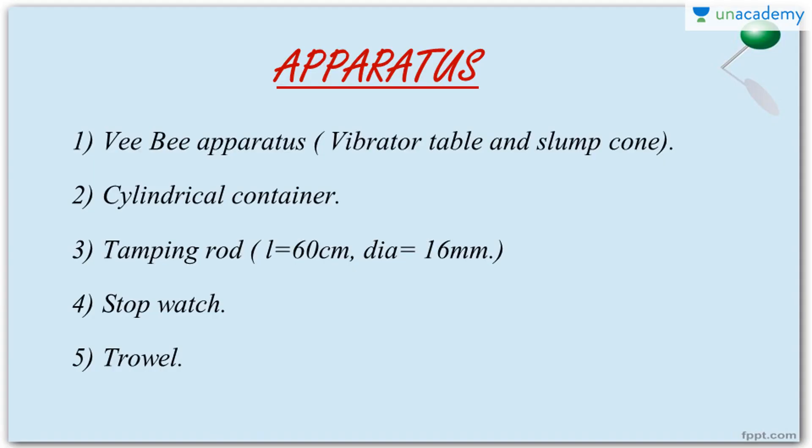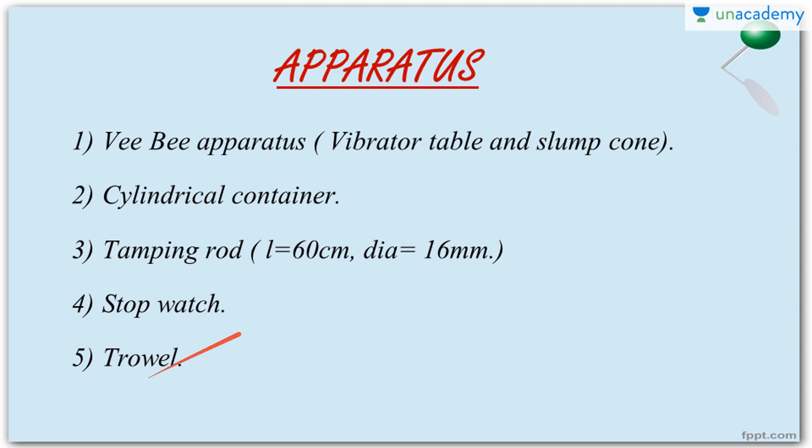Now let's see what apparatus is required. First, the VB apparatus itself, which consists of a vibrator table that is electrically connected, and also a slump cone. The dimensions of the cone are: bottom diameter 20cm, top diameter 10cm, and height 30cm. We also need a cylindrical container, a tamping rod with length 60cm and diameter 16mm, a stopwatch for measuring seconds, and a trowel for leveling and cleaning.